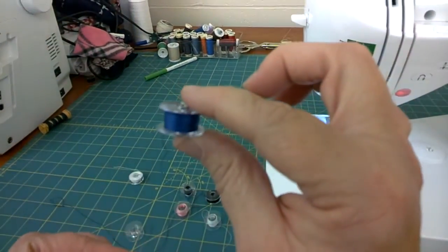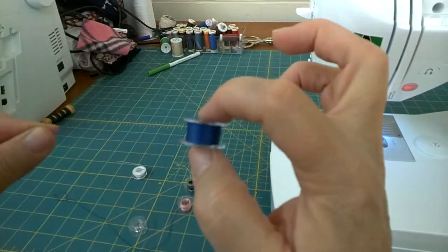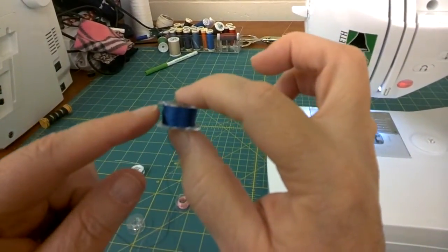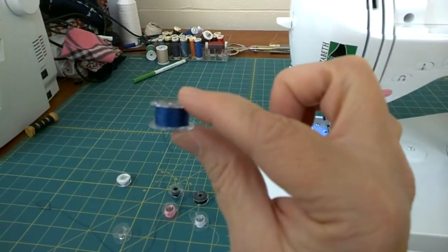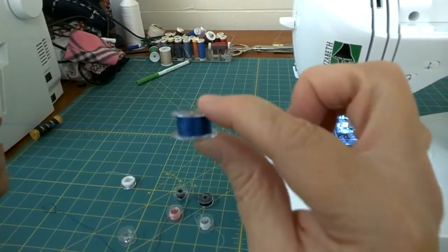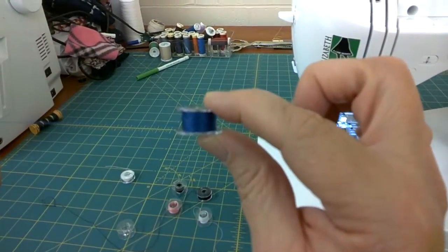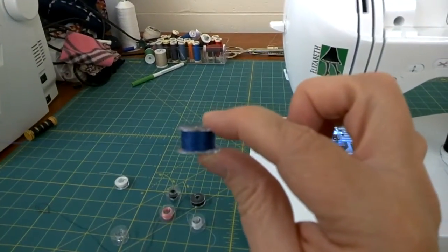Here's a bobbin that is correctly wound. Here's the thread that comes out. It comes out easily, it's nice and smooth, and we can use this to put in the sewing machine. So we want to wind our bobbin to make it look like this. I'm going to go through the steps on how to wind your bobbin in your Baby Lock machine.